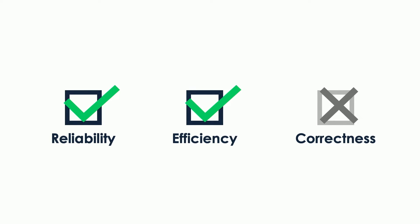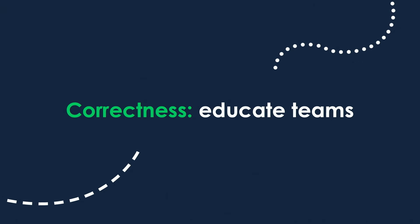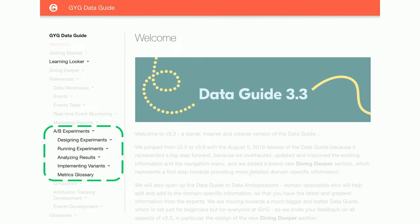That was the story of how we addressed efficiency. There was still one problem to tackle: correctness. Here we decided to invest in educating our teams, because there's more to A-B testing than just maths and statistics. There's the whole design, the hypothesis, there are bugs, and things specific to your company that you want to make everyone aware of. What we did first is launch self-study material, which became part of our data guide.